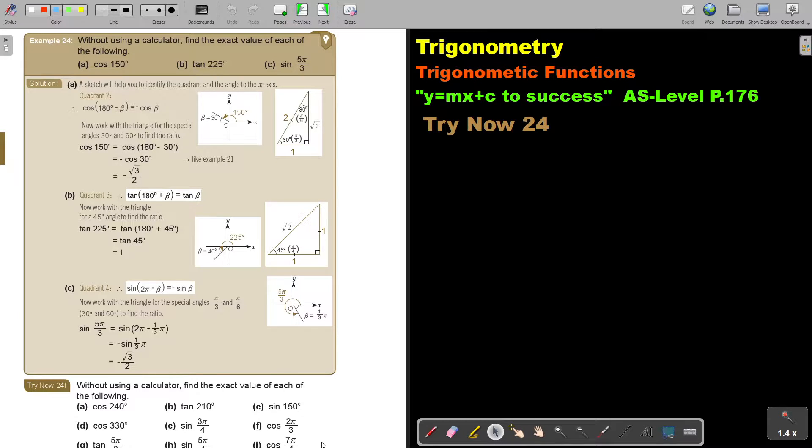In this video, we will continue with trigonometric functions. You will find this on page 176 in the Namibia AS level mathematics textbook y equals mx plus c to success. Let's look at another example. Without using a calculator, find the exact value of each of the following.